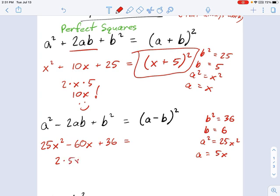times b, b is 6. Does that equal 60x, the term in the middle? And if you multiply this together, you'll see it does. So we have here another perfect square. This is going to be 5x, that's a, minus b, and b is 6. So 5x minus 6. Don't forget the squared. So that is how you use the identity of perfect squares in either case.